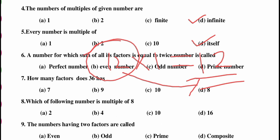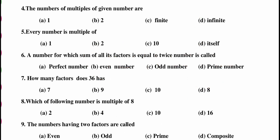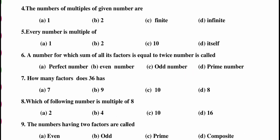Next question: a number for which the sum of all its factors is equal to twice the number is called — a perfect number, even number, odd number, or prime number? We know it is not even, not odd, not prime. The answer is perfect number.